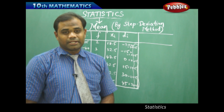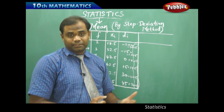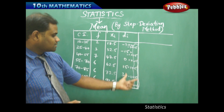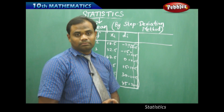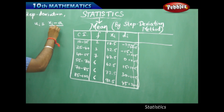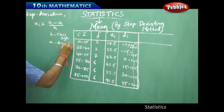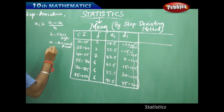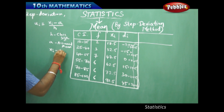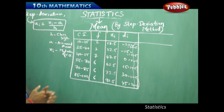If we do not get a common factor, it is not advisable to use the step deviation method for problems which do not have a common factor in their Di column, that is, in their deviations. Because we have the common factor 15 in each case of Di here, we can apply the step deviation method for this example problem.